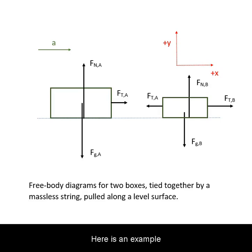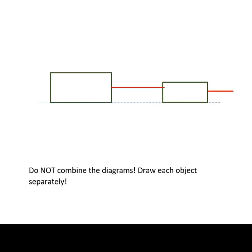Here is an example of multi-body free body diagrams. There are two masses tied together by a string, with another string pulling on the mass on the right.